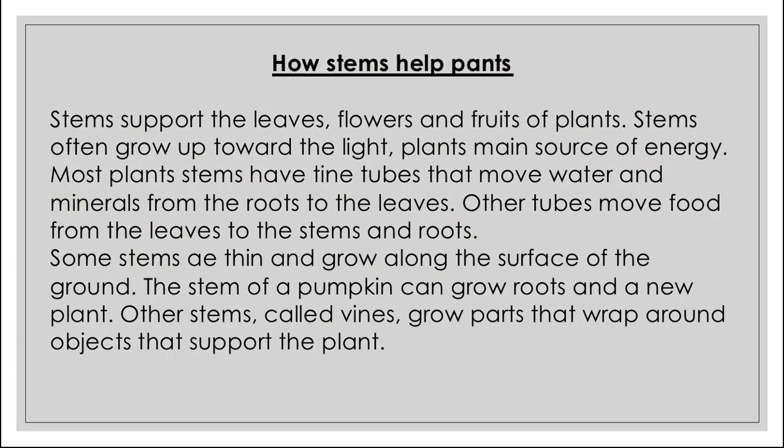How stems help plants: The stem supports the leaves, flowers, and fruits — they all grow on stems. Stems often grow up toward the light, which is the plant's main source of energy. Most plant stems have tiny tubes that move water and minerals from the roots to the leaves. Other tubes move food from the leaves to the stems and roots.